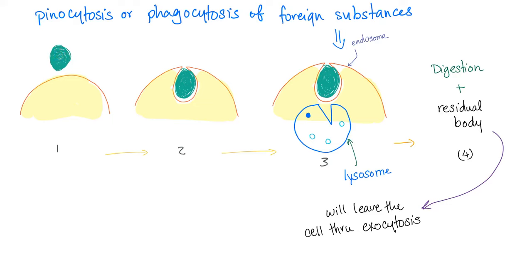In phagocytosis, first a pit is formed, then the bacteria is engulfed forming a vesicle. The lysosome then comes and fuses with this vesicle — this is called a phagolysosome — and digestion occurs. Some particles are digestible; others are not. Indigestible material forms a residual body that exits the cell through exocytosis. Exocytosis is the exact opposite of endocytosis, following the same steps but in reverse.